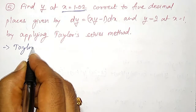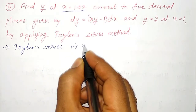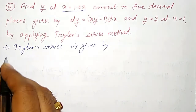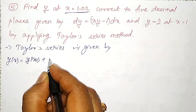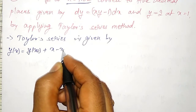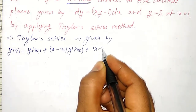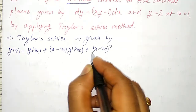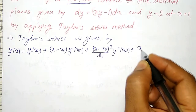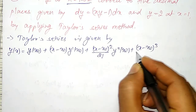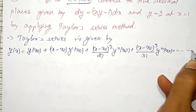Taylor series is given by: y(x) = y(x₀) + (x − x₀)·y'(x₀) + (x − x₀)²/2! · y''(x₀) + (x − x₀)³/3! · y'''(x₀) + and so on.